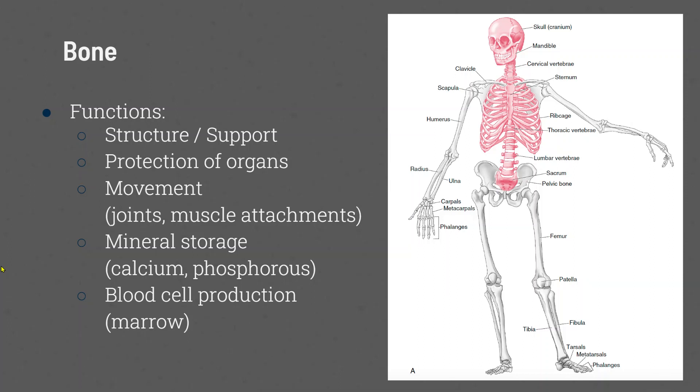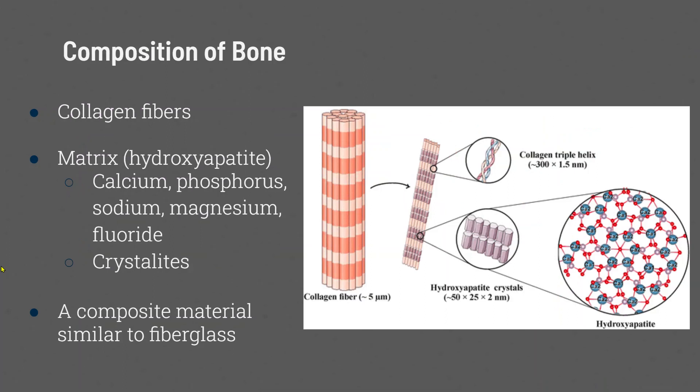Bone is made up of two main components: collagen fiber, which you can imagine as rubber bands — they're flexible, so they resist tensile load — and the mineral matrix, called hydroxyapatite, which forms crystals and is very stiff, so it can resist compressive loads. Put together, your bone is similar to fiberglass or plexiglass.